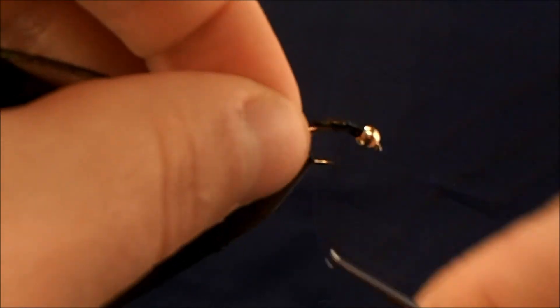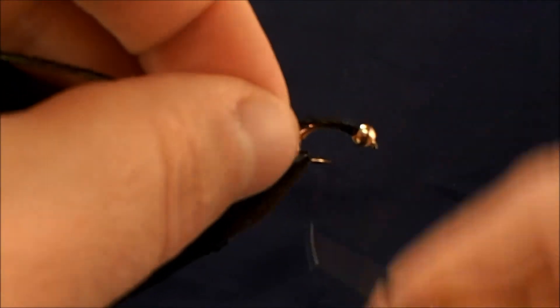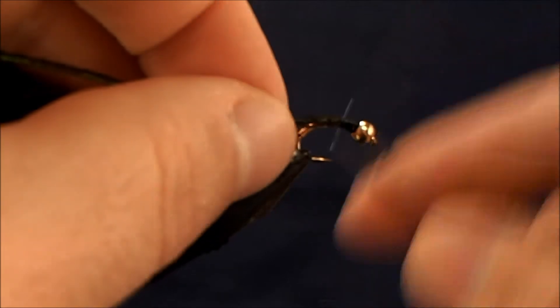I'll tie in these ends again right behind the bead head. I'll take my wraps back as far as I want my thorax to be wide, and then I can start to make my wraps.